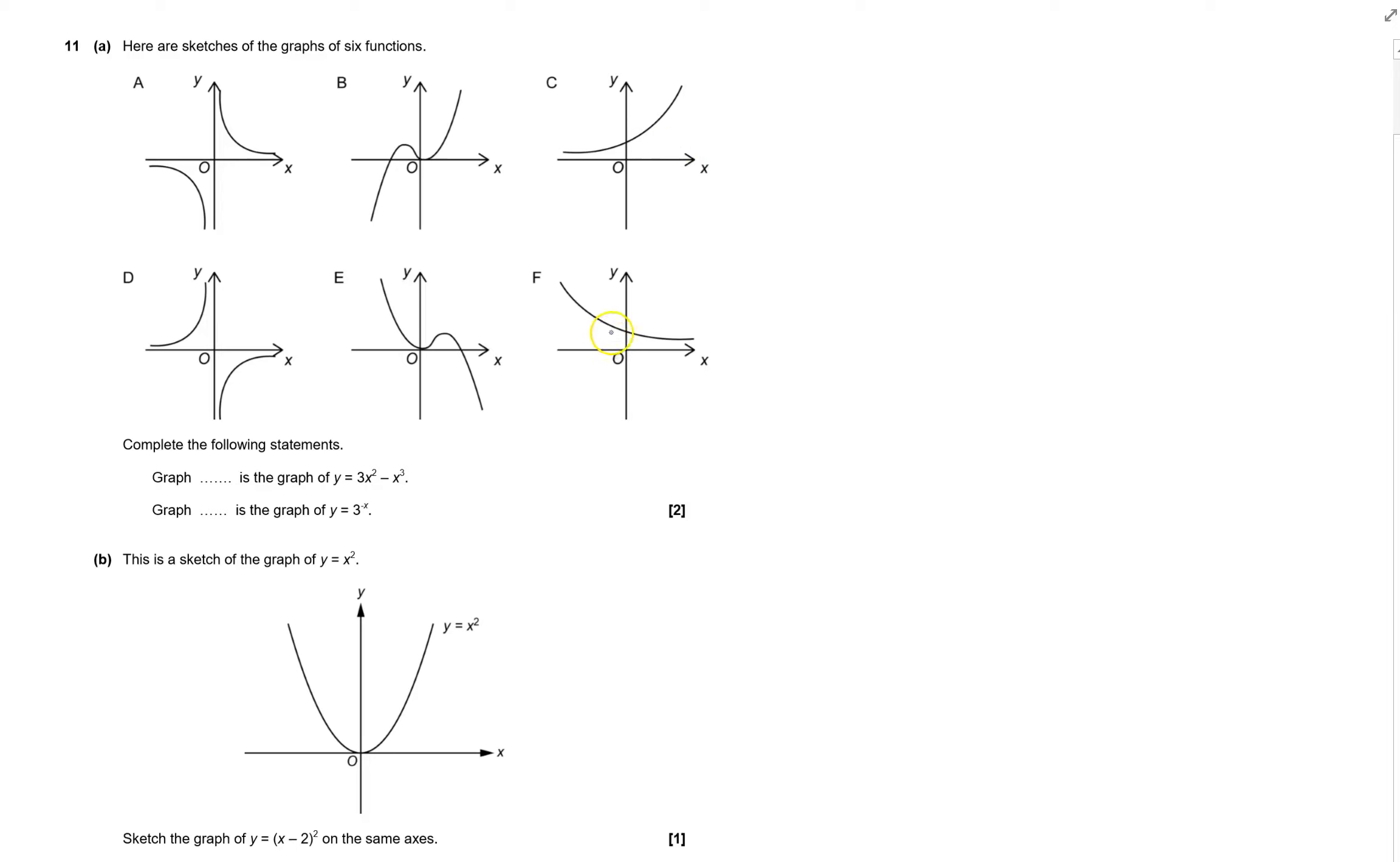Okay, we've got six functions up here, the graphs of these. And this one, y equals 3x minus x cubed. Well, it's the x cubed which takes most relevance because it's got numbers which are bigger. So if I have 5 cubed, that would be 125, but 5 squared would only be 25.